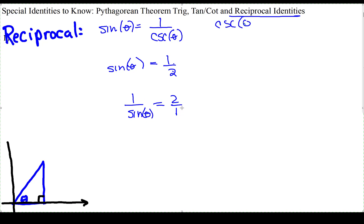And cosecant, because these are reciprocals, cosecant is 1 over sine. See how sine is 1 over cosecant, and cosecant is 1 over sine.